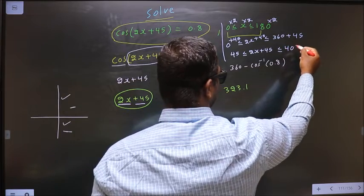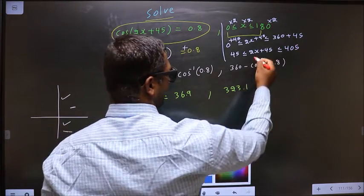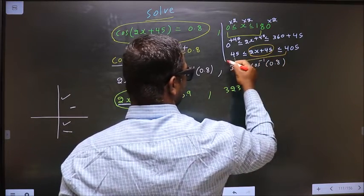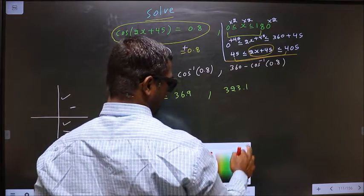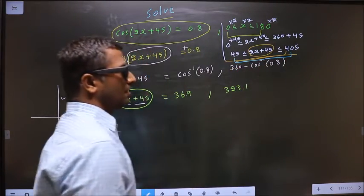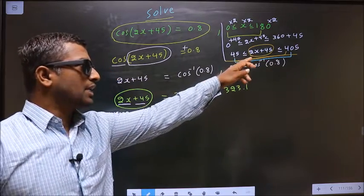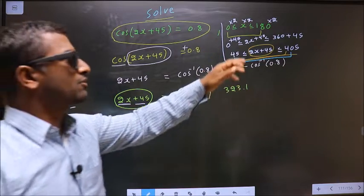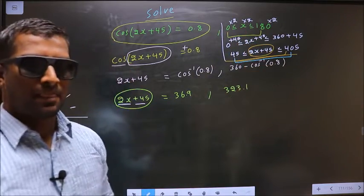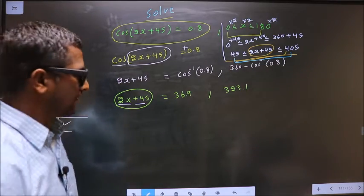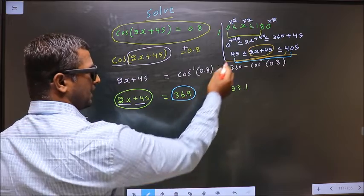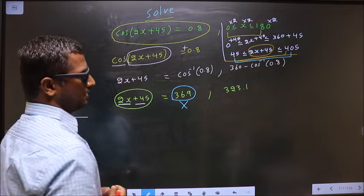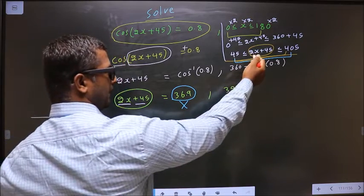Now the values for 2x + 45 should lie in this interval. When 2x + 45 values lie in this interval, automatically the values for x lie in this interval. Understood? Now let us check. Does this lie in the interval? No, so you reject it.